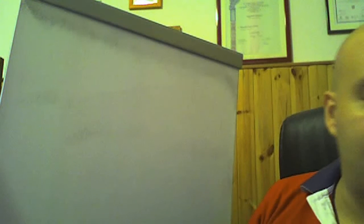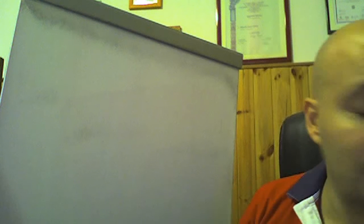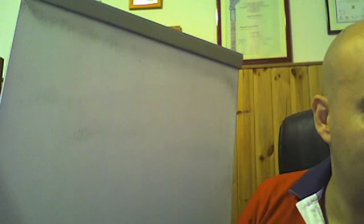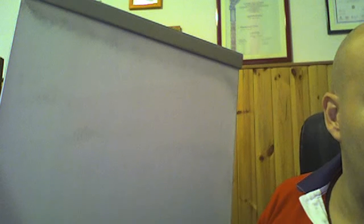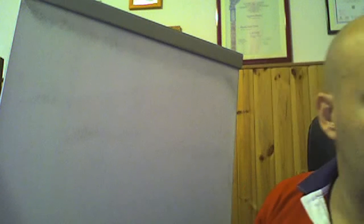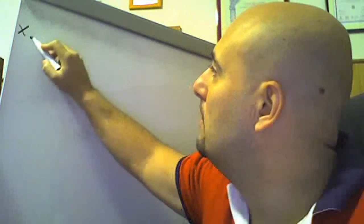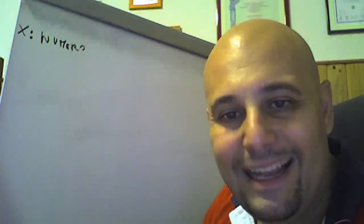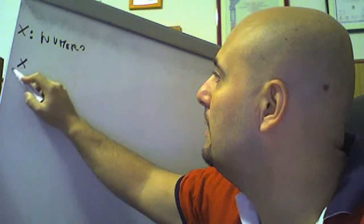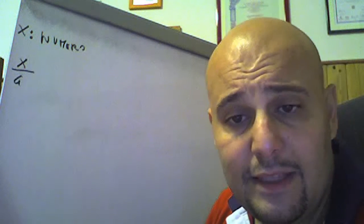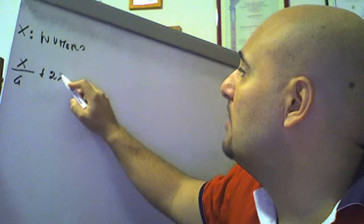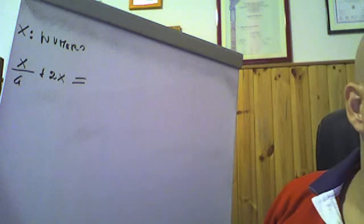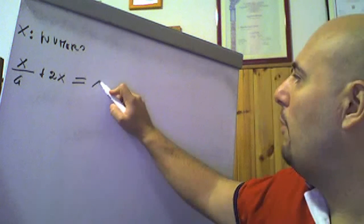Anche questo secondo problema è facilissimo. La somma della quarta parte di un numero con il doppio del numero stesso equivale al numero aumentato di 15, determina questo numero. Il numero lo possiamo indicare con x. La quarta parte di x è x/4, più il doppio del numero, 2x, equivale al numero x aumentato di 15.